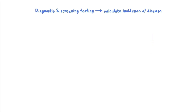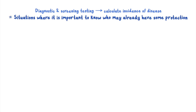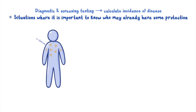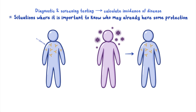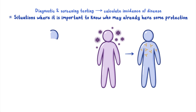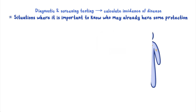Public health experts often use data from diagnostic and screening testing to calculate the incidence of disease. However, there are also situations where it's important to know who may already have some protection against getting a disease even if they are not currently infected. This protection, also known as immunity, may be because they have already had the disease or because they have been vaccinated.